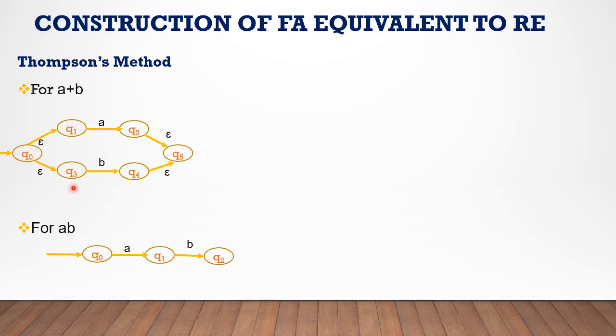For concatenation — a followed by b, that is ab — this is a concatenation. We build an NFA for a concatenation, with states Q1, Q2 connected.